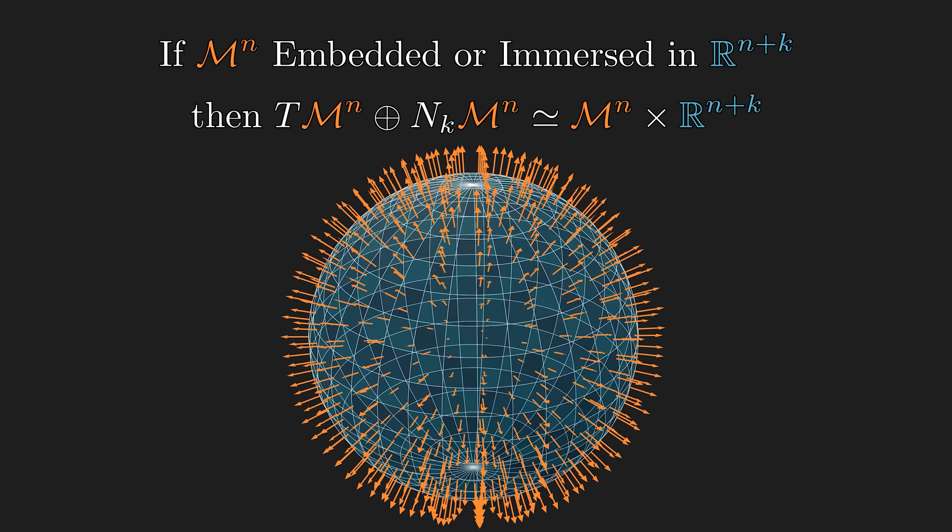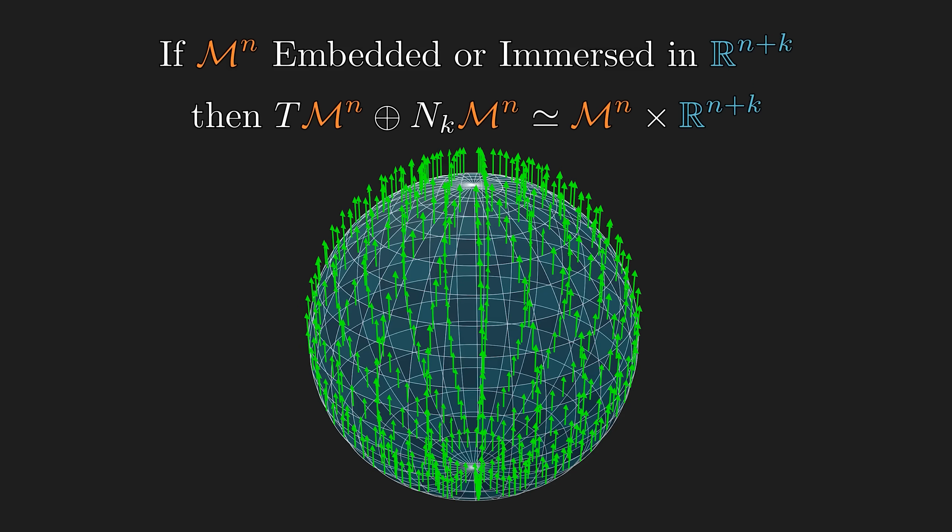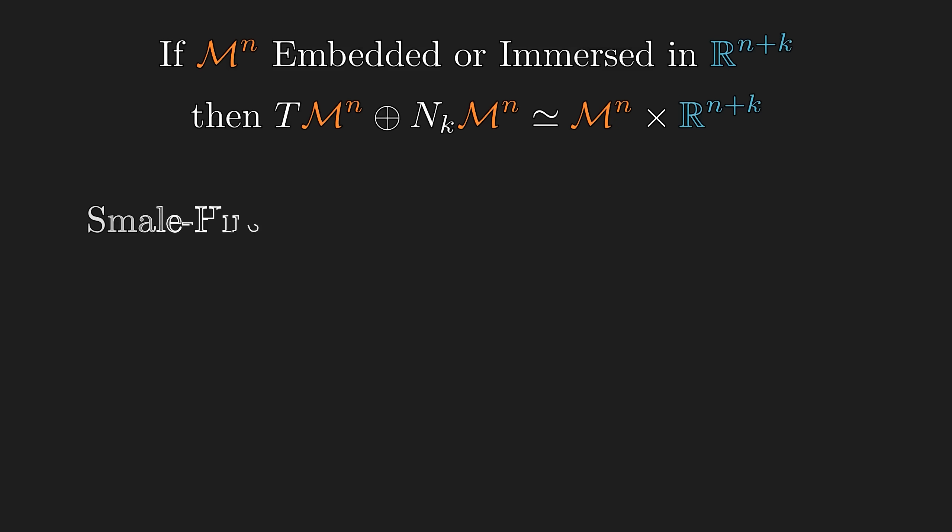As we saw in the case of a sphere, the normal bundle is untwisted, but it provides just enough dimensional leeway to stabilize the tangent bundle.